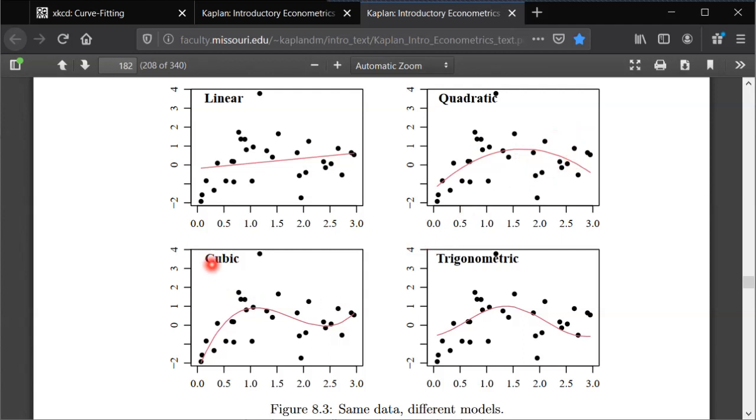And then the cubic is even more flexible than the quadratic, and now starts to disagree for the larger values of X, but sort of the opposite reason again. Now it's increasing again, so it shows a positive relationship here, whereas quadratic was decreasing. But the cubic disagrees with the linear model for these middle values of X, where it shows a negative relationship, where the linear model showed a positive relationship.